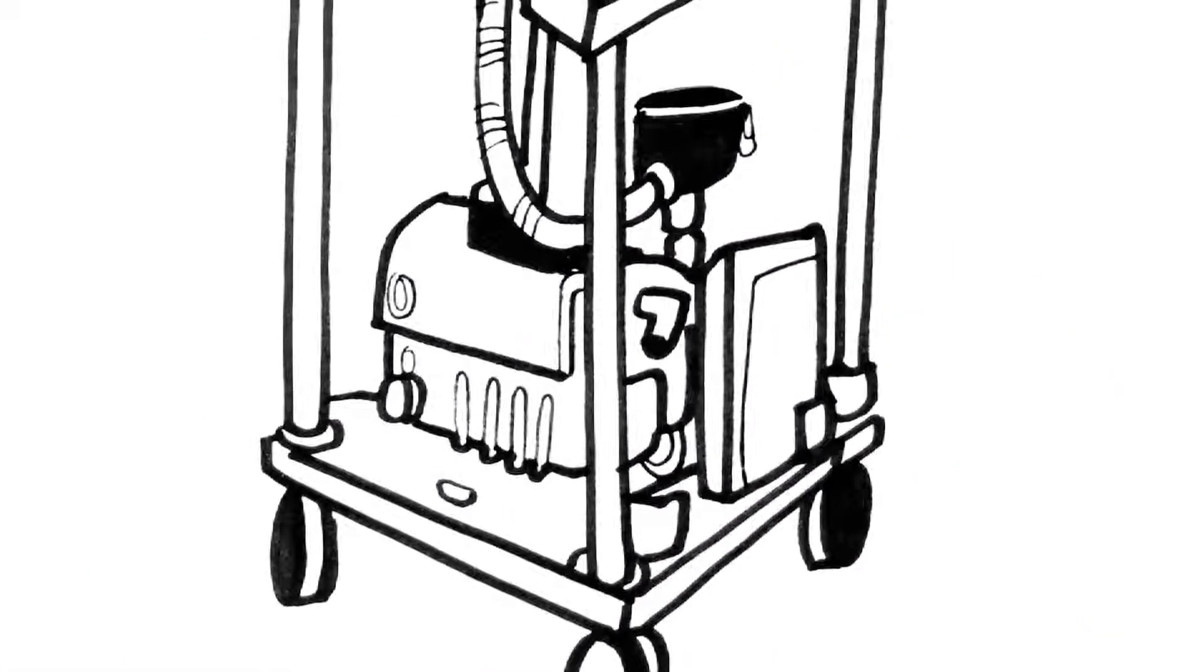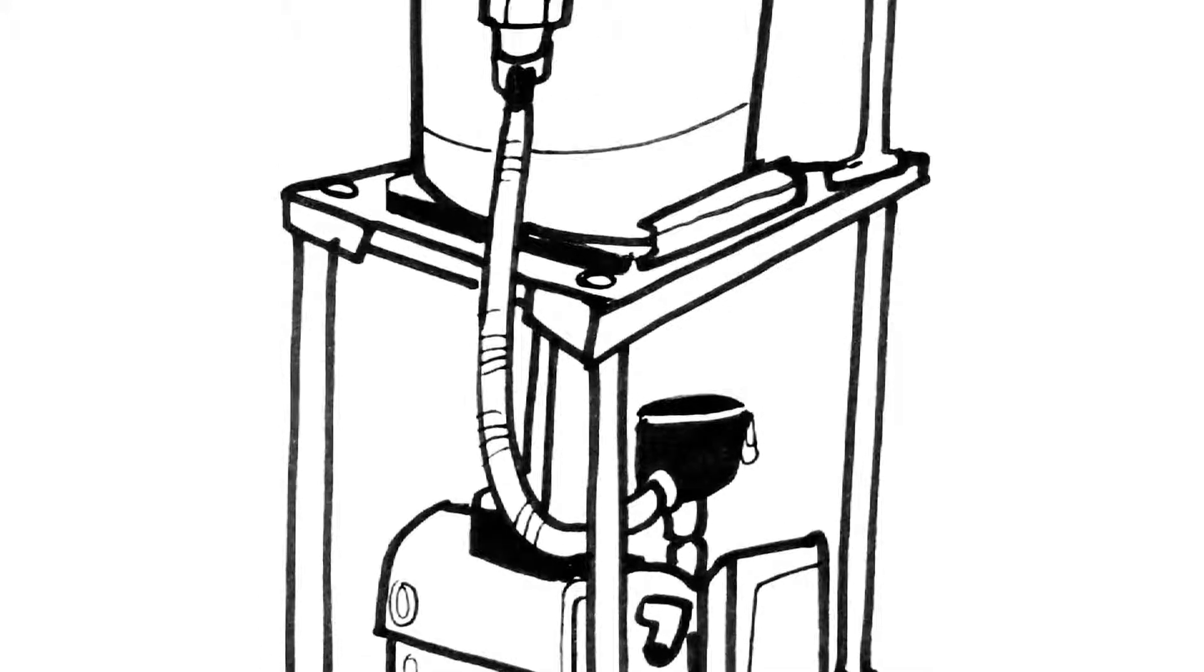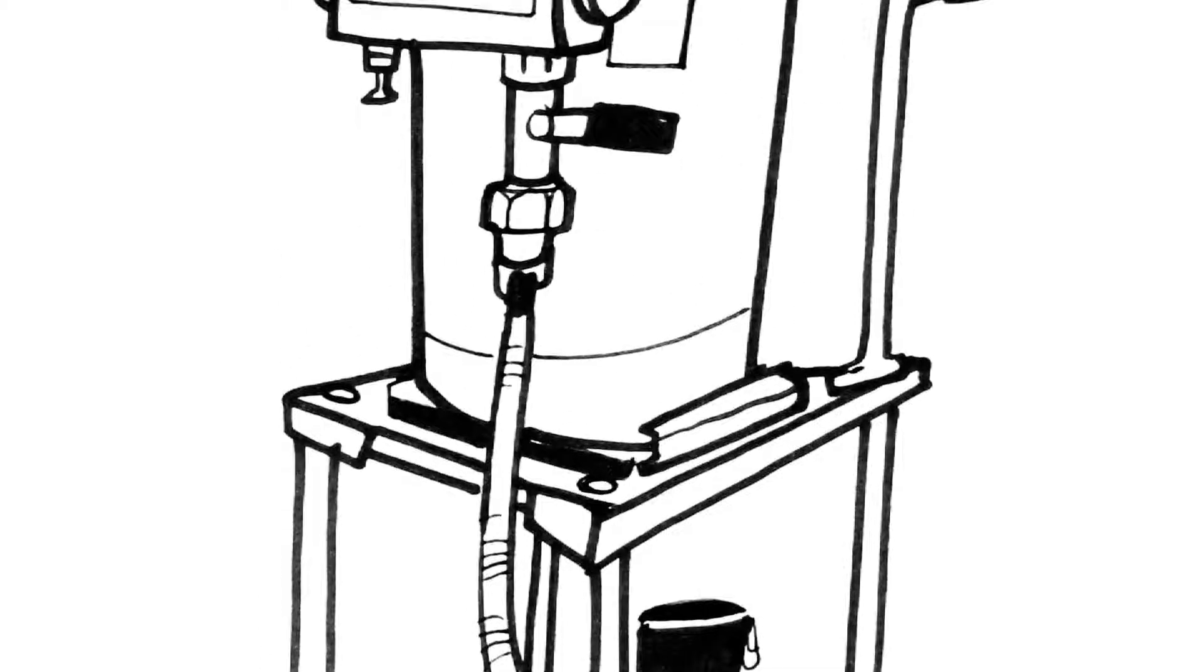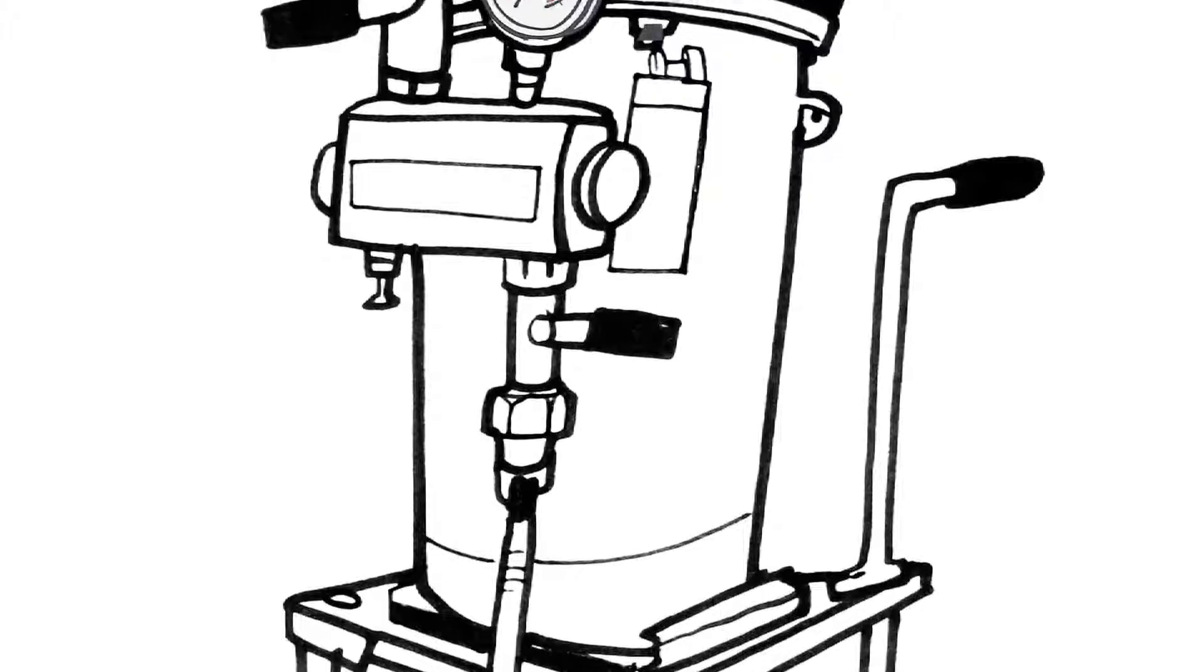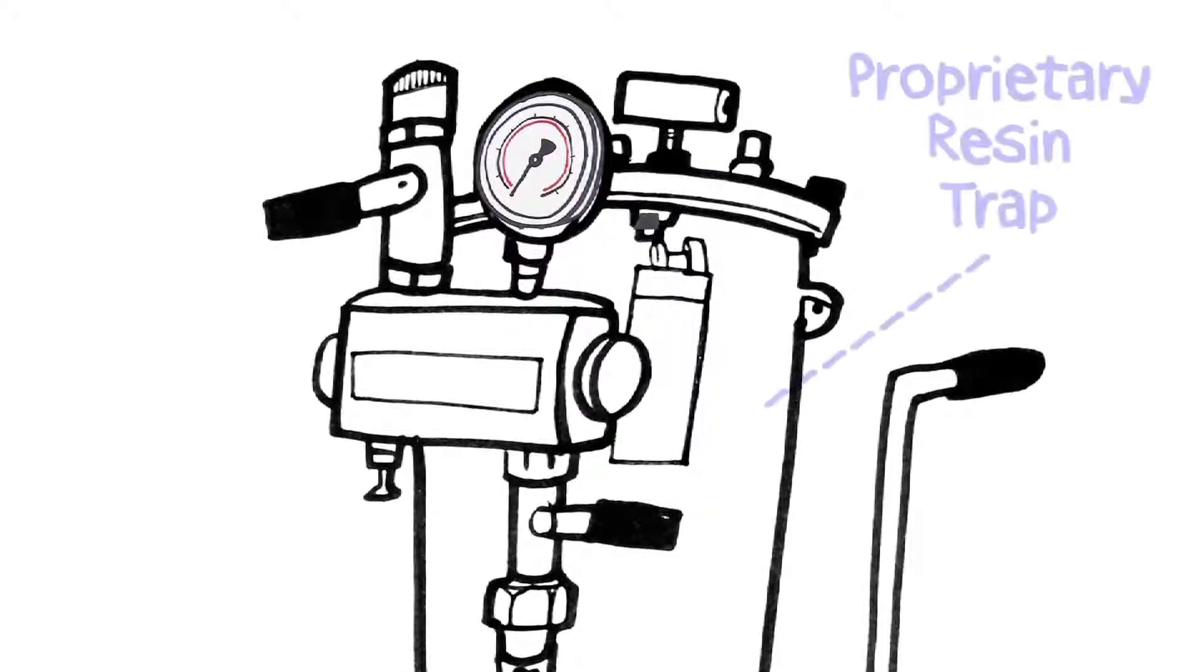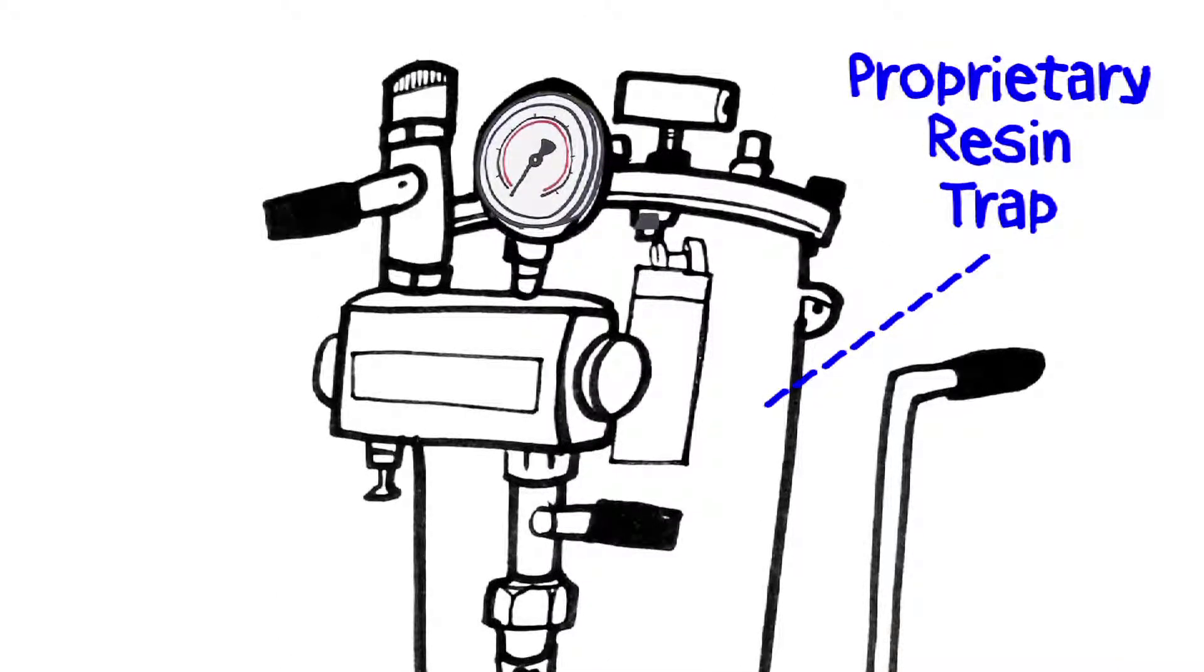Vacmobiles' components and controls are designed by infusion experts, specifically for the vacuum infusion process. Hoses and fittings seal tight, without clogging. Vacuum is nearly perfect. Vacmobiles' proprietary resin trap provides an extra measure of insurance.